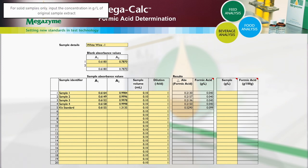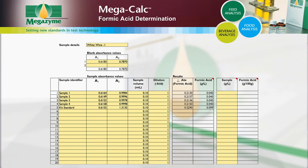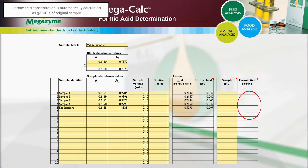For solid samples, input the concentration of the original sample extract formic acid in grams per litre. The concentration of formic acid in the solid samples is then automatically calculated and provided as grams per 100 grams in the original sample.